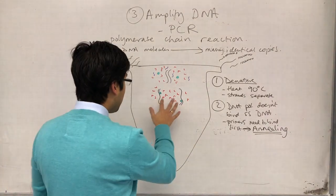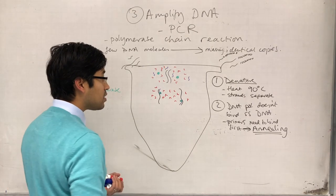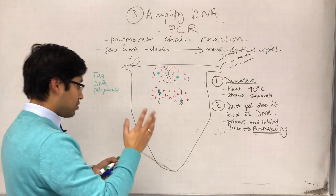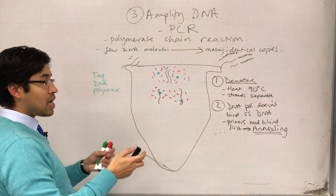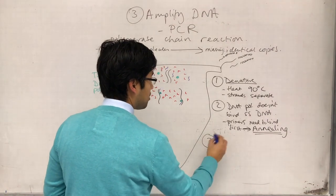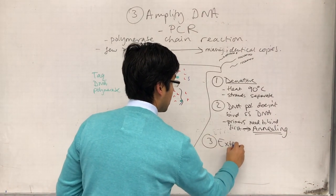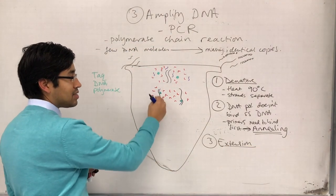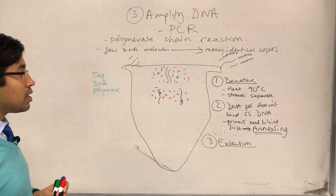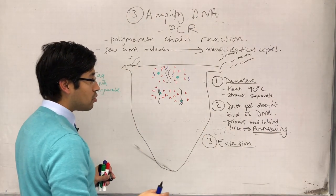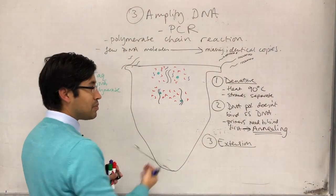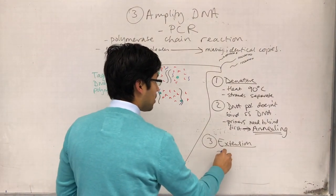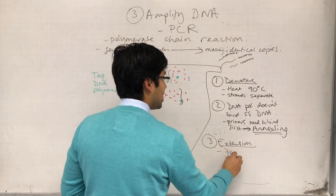All right. And because the optimum temperature of TAQ polymerase, because now it's ready to work, the optimum temperature of TAQ polymerase is quite high, and so we raise the temperature to 80 degrees to get the third stage. So, the third stage is called the extension stage where the DNA polymerase is going to extend this, extend from the primer forwards.